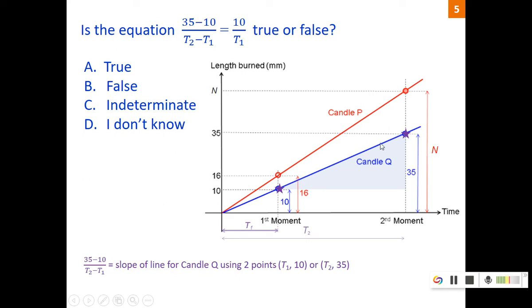Now, what about 10 over t1? 10 over t1 is actually this over this. If you want to use equation of the line, you can pick two points. The second point is the origin. So again, 10 over t1 is the slope of this line segment. Since this line is the same line, it must have the same slope throughout because it's burning at a constant speed. So hence, the two ratios are equal. And therefore, this is true.